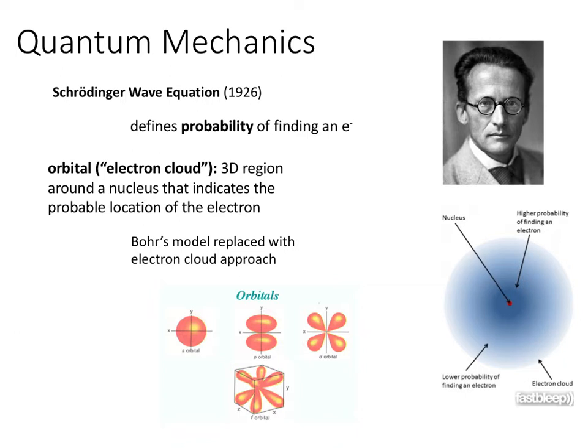So instead of Bohr's model where electrons orbit in circular planetary-type pathways, we actually have a 3D region around the nucleus with specific shapes — like a spherical orbit, a dumbbell shape, or a clover shape. These are the calculated 3D regions where the electrons would reside.